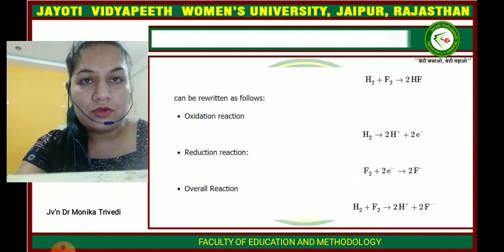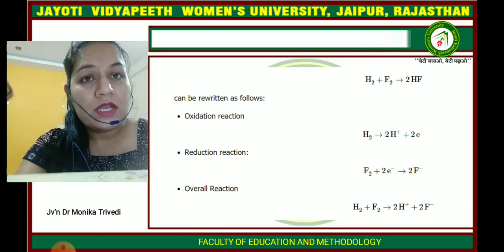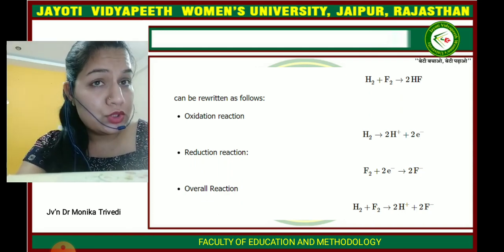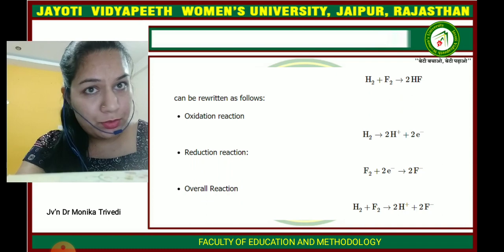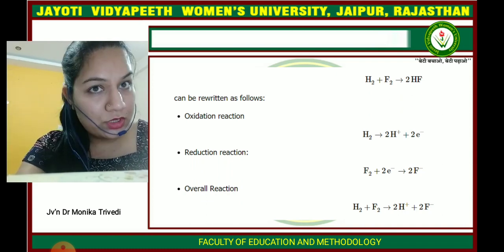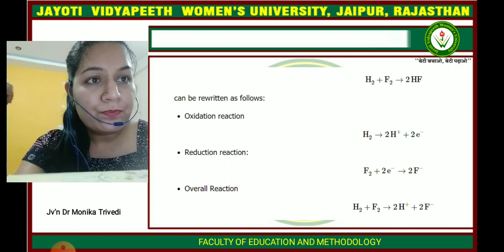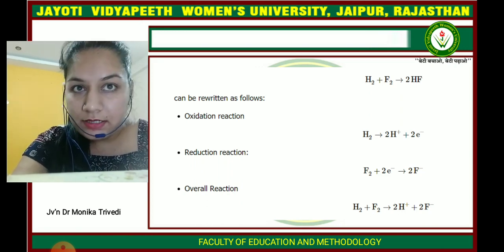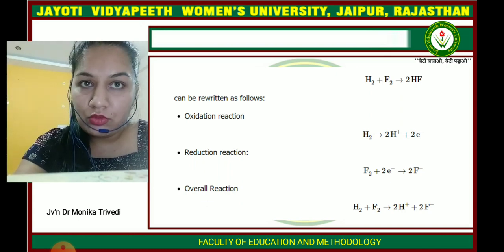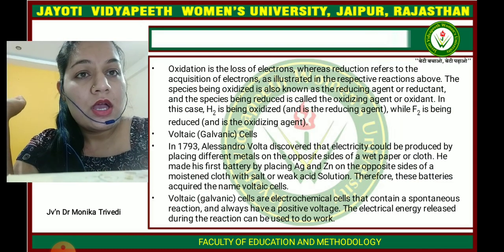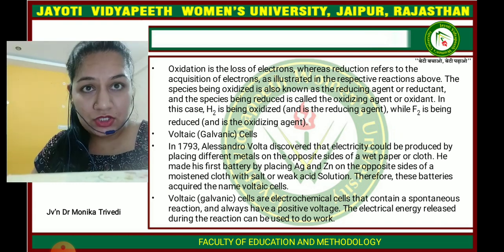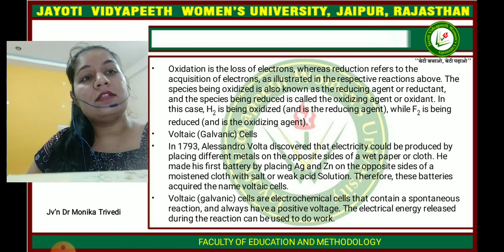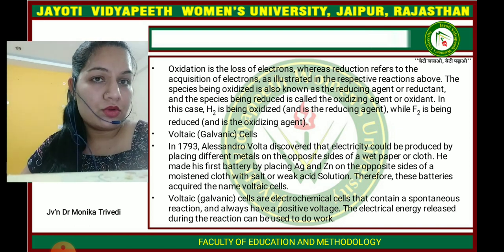Here you can see the example: when H2 plus F2 converts into two moles of HF. This reaction can be written as — first, the oxidation reaction where the H2 molecule loses two electrons and converts into 2H+. In the reduction process, F2 molecule gains two moles of electrons and converts into 2F−. The overall reaction is H2 + F2 = 2H+ + 2F−. The agents which oxidize elements are known as oxidizing agents, and the agents which reduce elements are known as reducing agents.